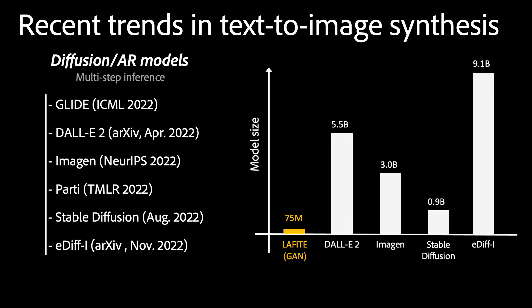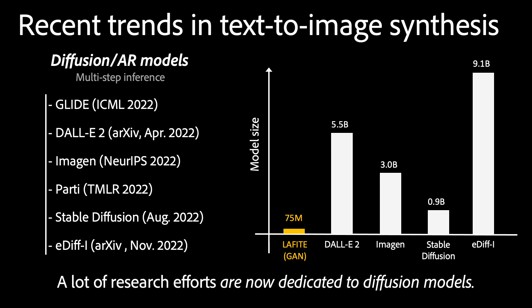Beginning with GLIDE in 2022, diffusion models like DALL-E 2, Imagen, and Stable Diffusion have essentially become the de facto standard for text-image synthesis. These models contain parameters on a billion scale, significantly exceeding the 75 million parameter count of state-of-the-art GAN models. This massive increase in parameters contributed to the notable improvement of diffusion models over their GAN counterparts. As a result, a lot of research efforts are now dedicated to diffusion models.